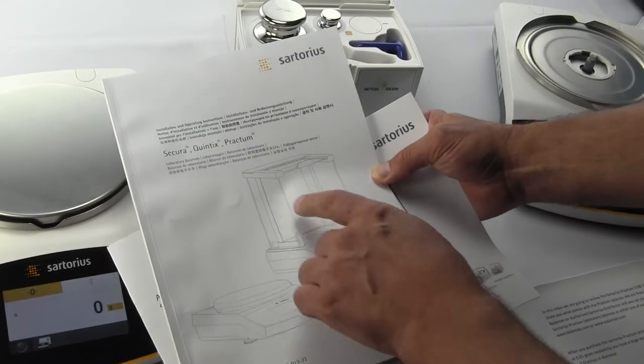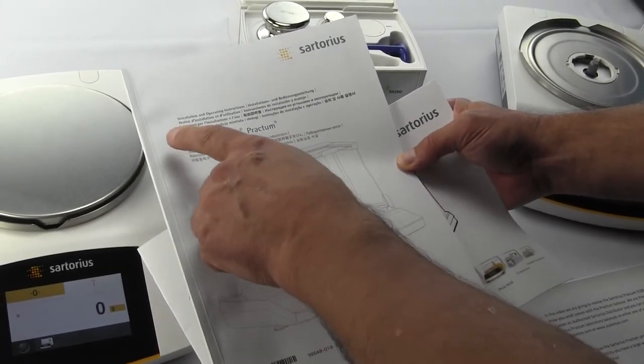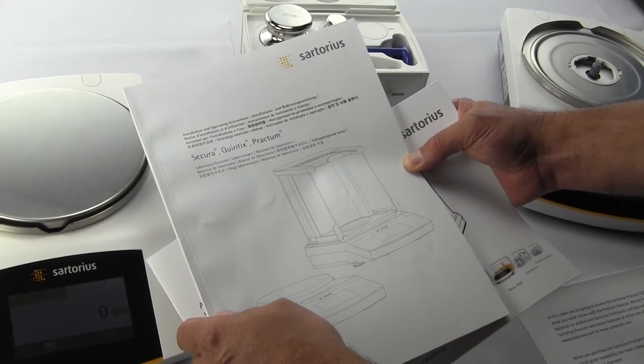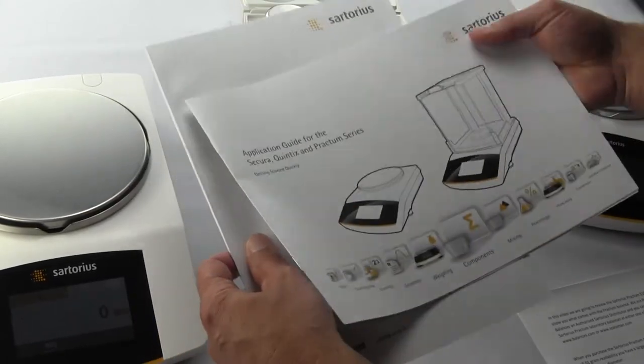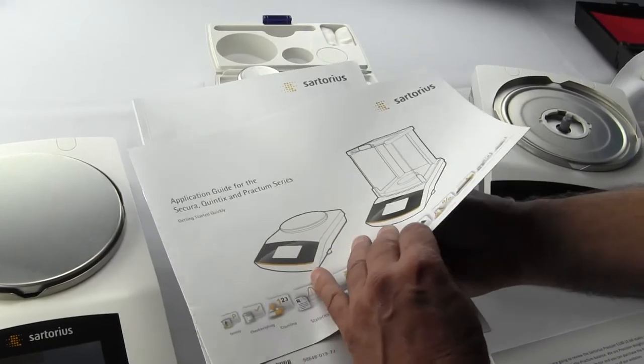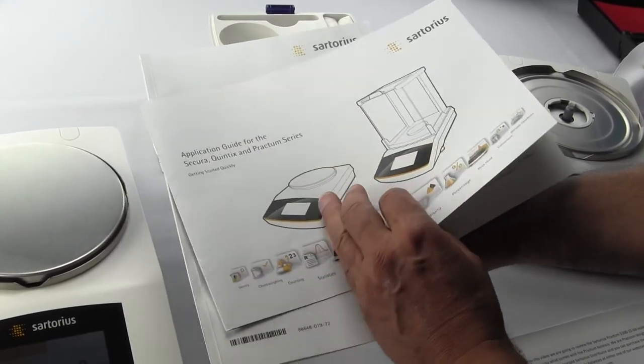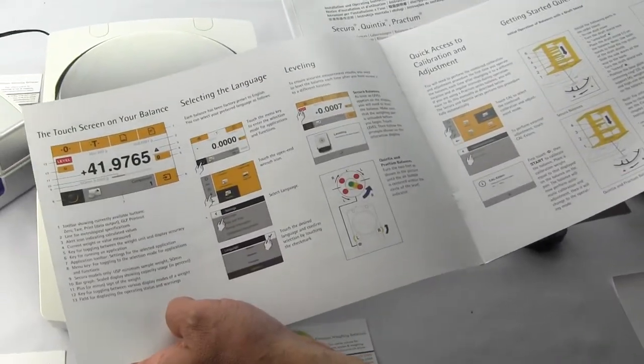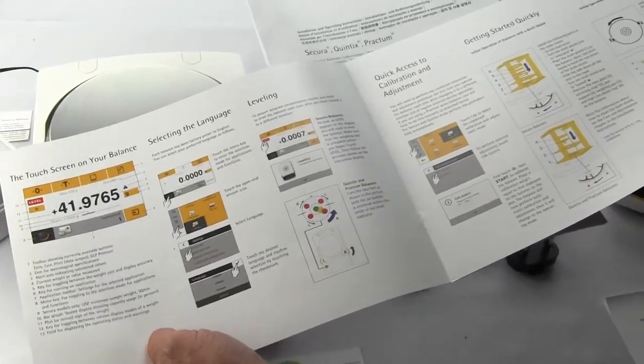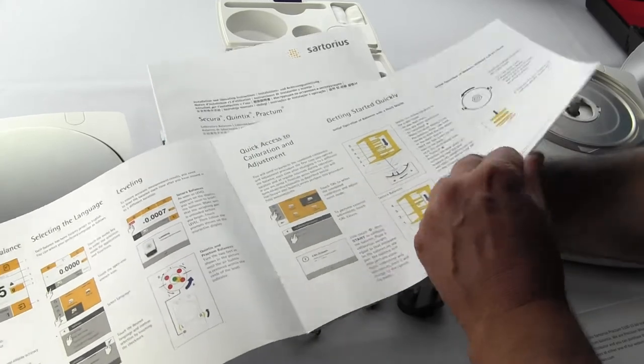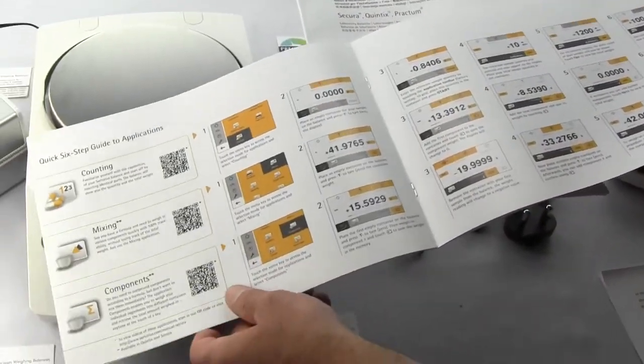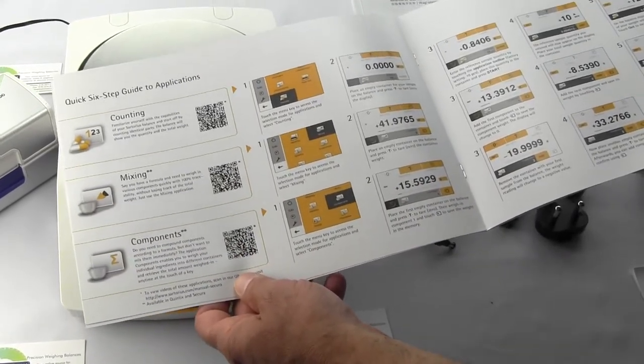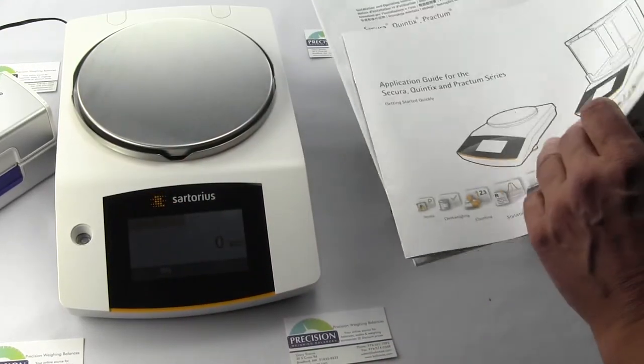You also receive with the Practum, and this would be the same for the Secura and Quintet series, this installation and operations instruction guide and the application guide for the Quintet, Practum, and Secura series. It's a nice colored brochure that easily explains the whole balance and operation. There are even QR codes you can scan with your phone that bring you directly to Sartorius' website to learn additional information.